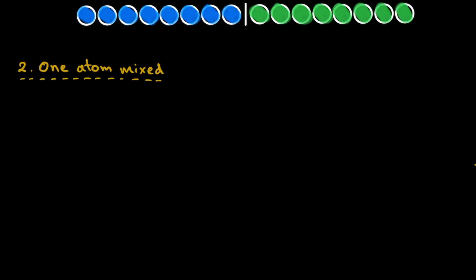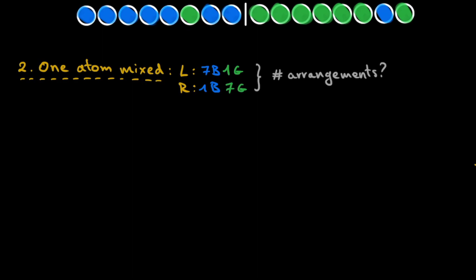Let's go to the next case and introduce some mixture — only 1 atom of a different color on each side of the divide. Let's say these two atoms swap, meaning we have one blue atom on the right and one green atom on the left. This translates to a new constraint: on the left we have 7 blue atoms and 1 green atom, and consequently on the right 1 blue atom and 7 green atoms. To find the number of arrangements, let's look at each side of the divide separately and then combine them.